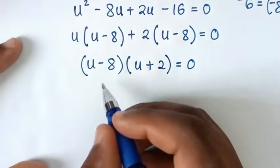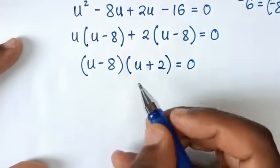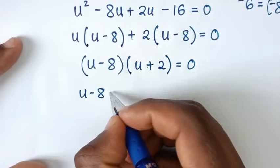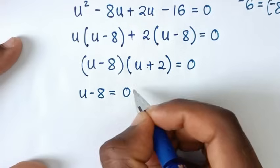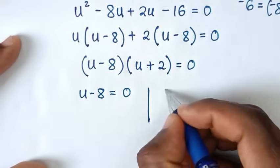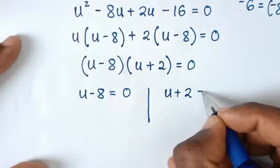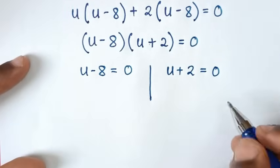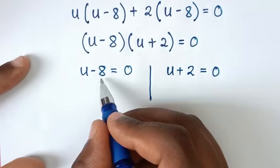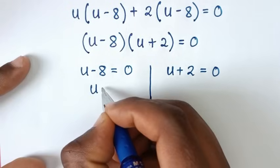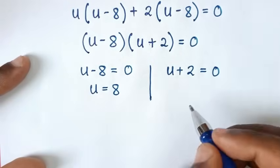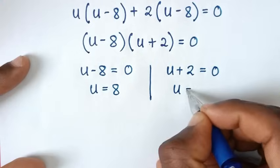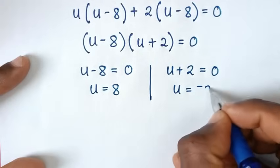From this we have two solutions: first, u minus 8 equals 0, giving u equals 8. And second, u plus 2 equals 0, giving u equals negative 2.